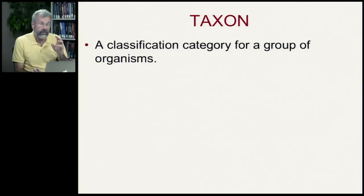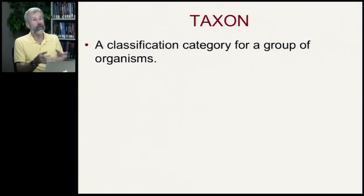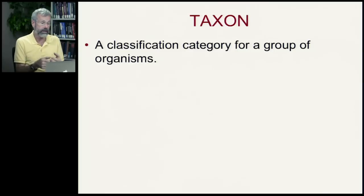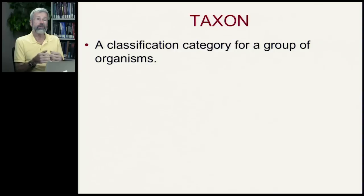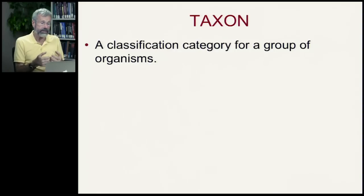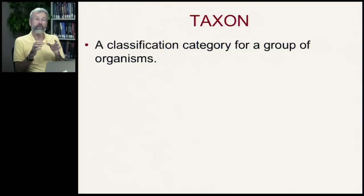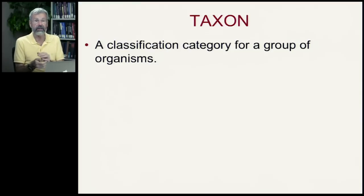Now, in setting out to understand what Linnaeus did, and to use that as a foundation for modern classification, we need to know a few more terms. The first is just the term taxon — a classification category for a group of organisms. A taxon can sometimes be very precise, and sometimes it's rather general.